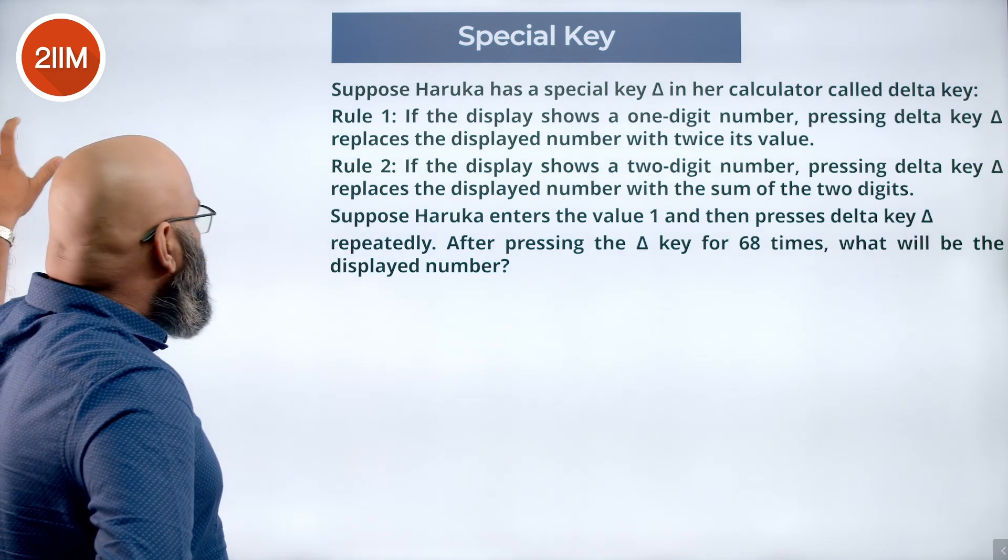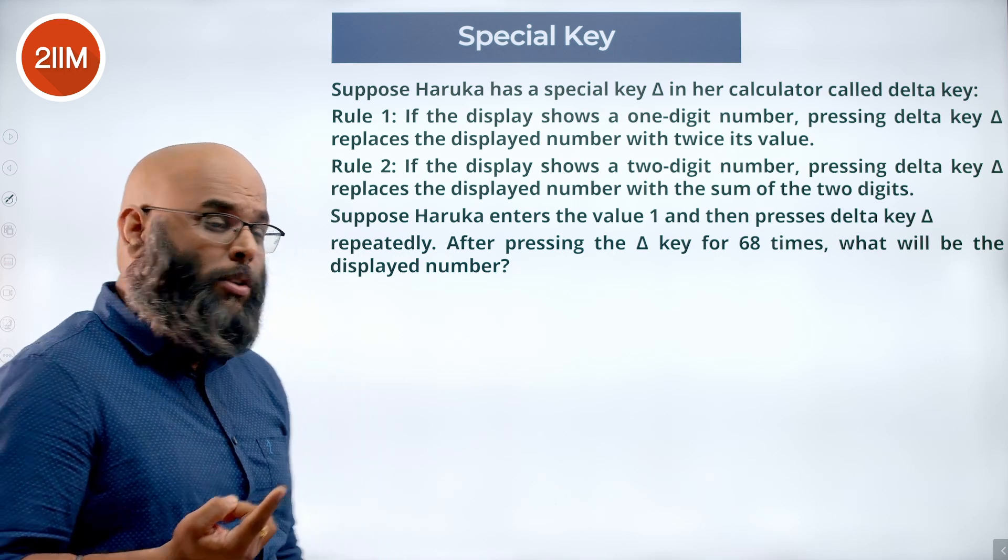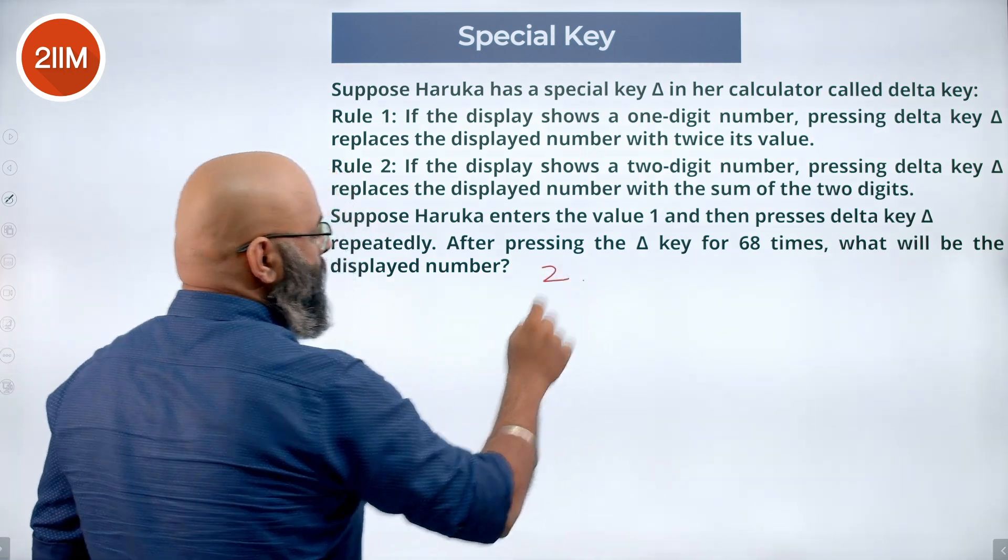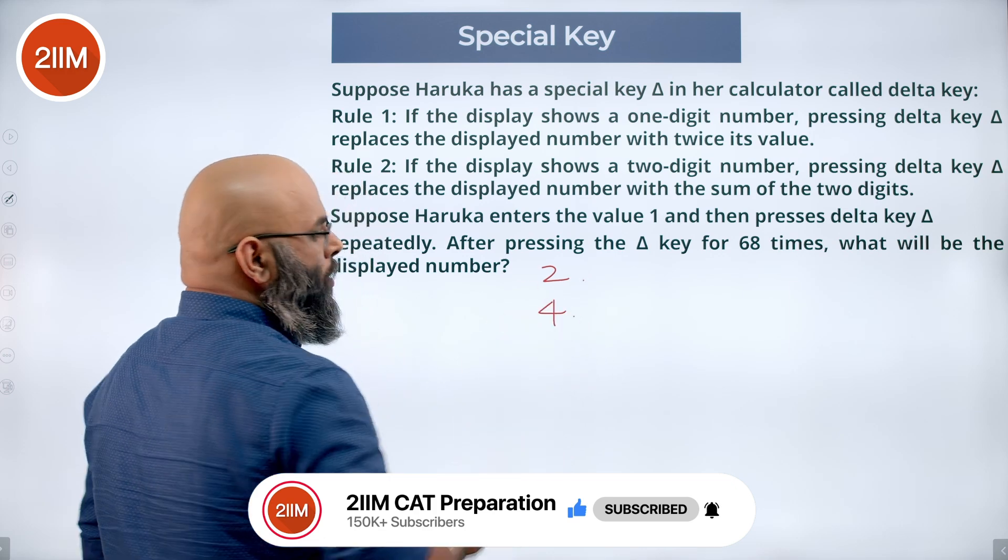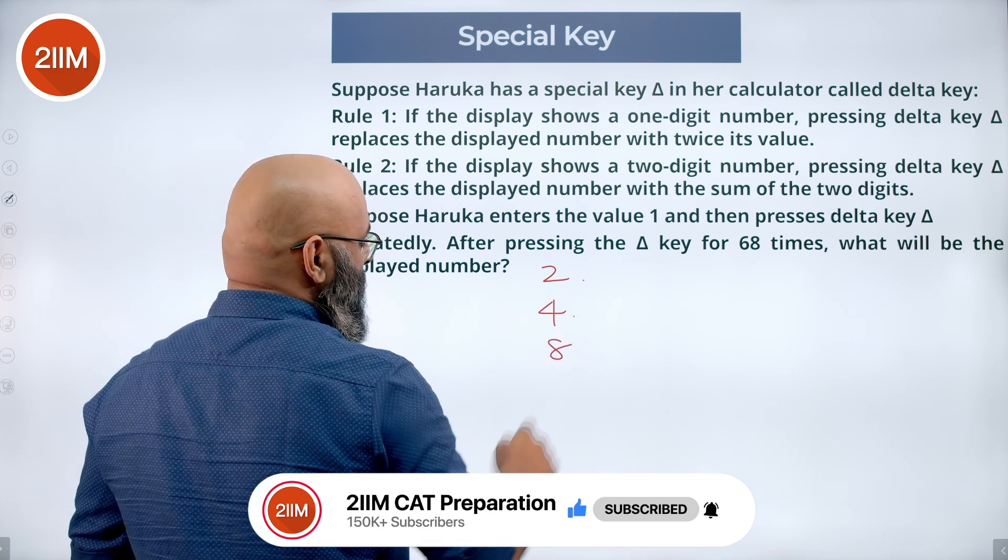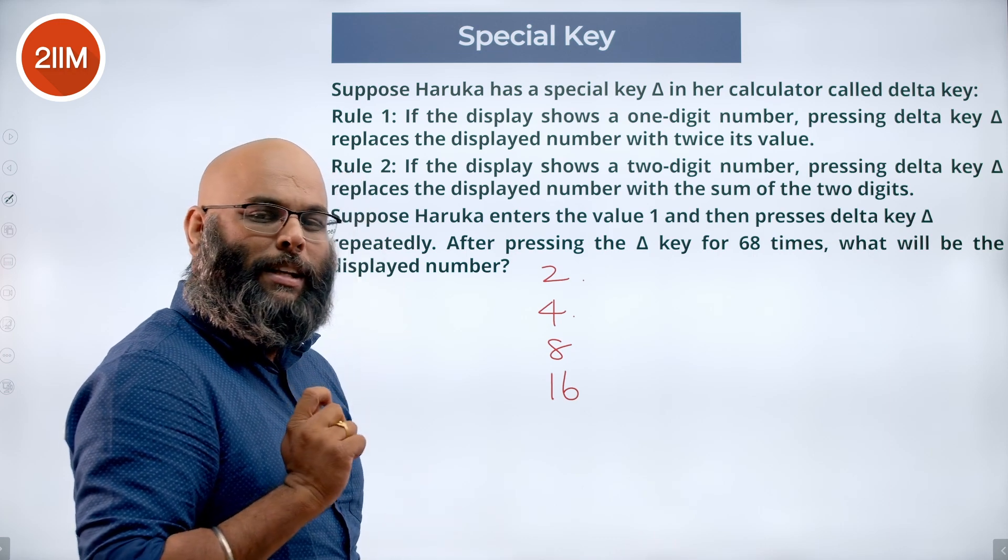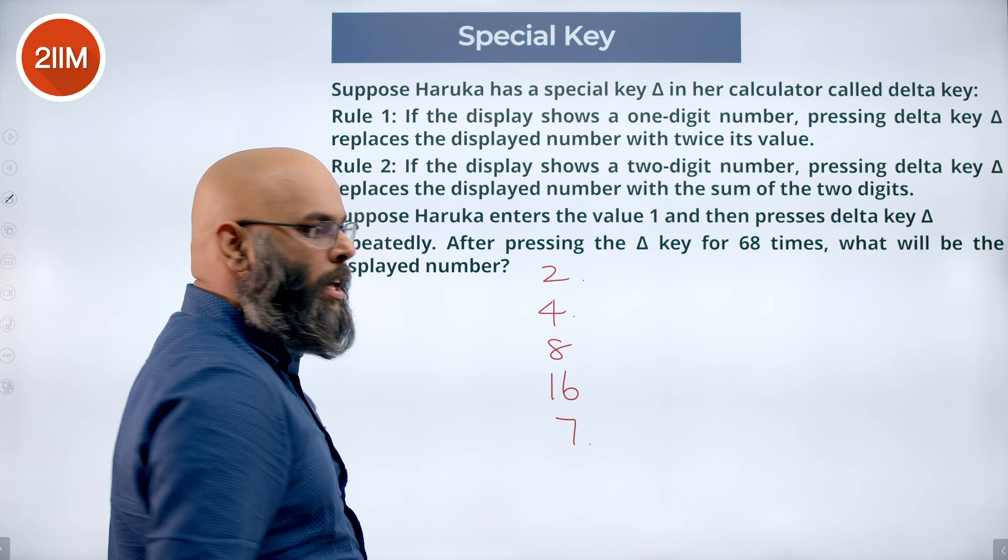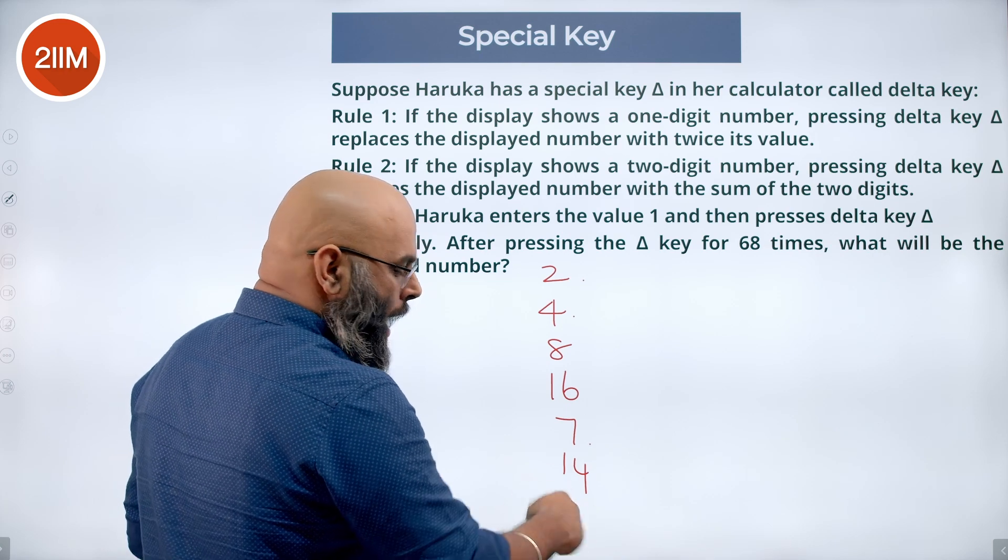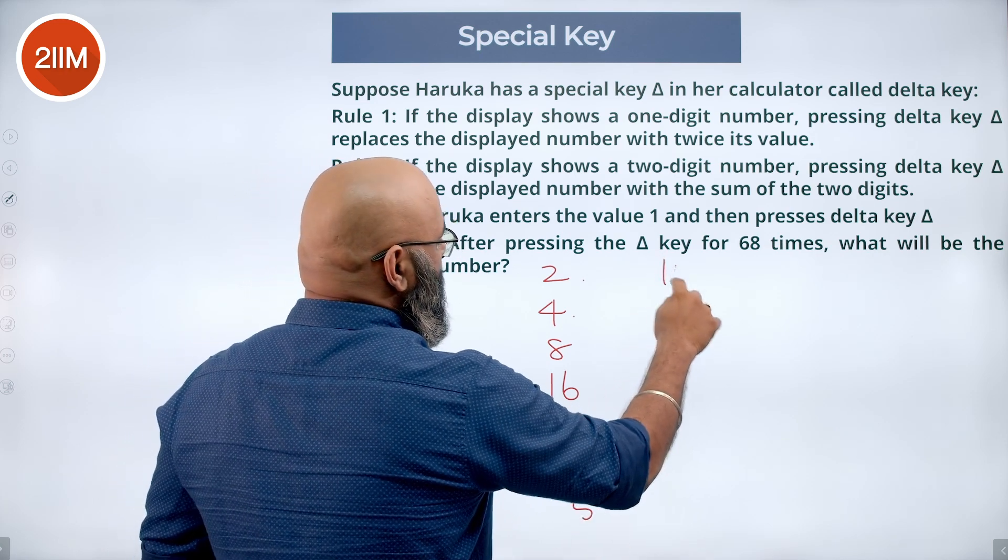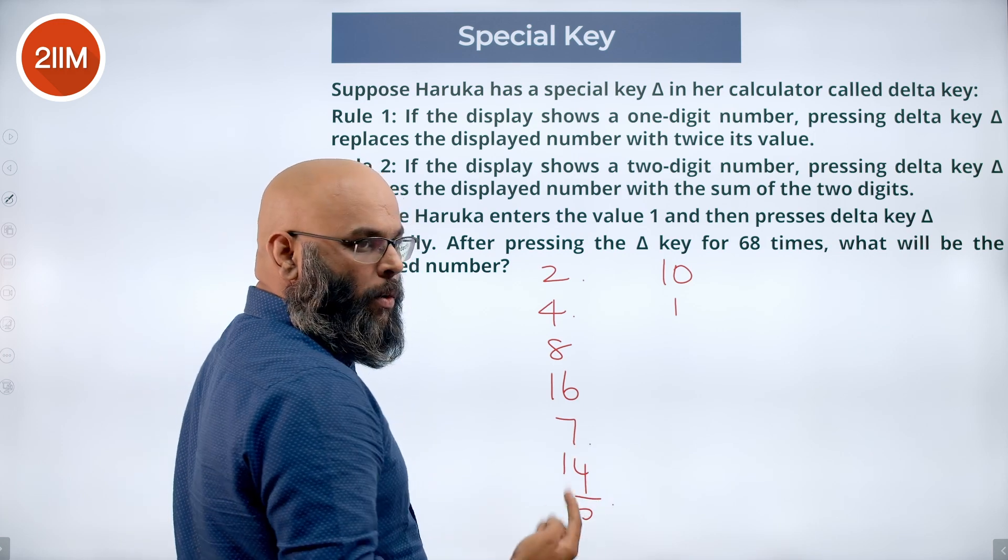Now she has already given us one. The display has one. She presses the delta key for the first time. It's a one-digit number, doubles to 2. You press delta again, doubles to 4. Another delta gives me 8, then 16. Now I have a two-digit number. If the delta key is pressed again, they get added, we get 7. And again, 7 doubles to 14. Delta adds the digits, you get 5. You press delta again, gets doubled, that's 10. You press delta again, that gets added, that's 1. You press delta again, 1 becomes 2.